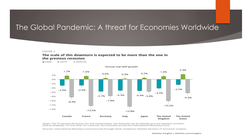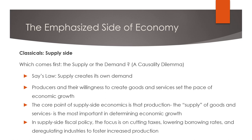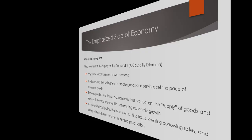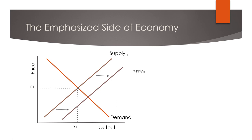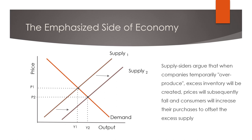The fourth distinction is the relevant side of the economy. For the Classicals, this is the supply side. Jean-Baptiste Say, a classical economist, stated that supply creates its own demand. Producers, in their willingness to create goods and services, set the pace of economic growth. The core point of supply-side economics is that production — the supply of goods and services — is the most important factor in determining economic growth. In supply-side fiscal policy, the focus is on cutting taxes, lowering borrowing rates, and deregulating industries to foster increased production. In this graph, we can see that when there is an increase in supply from S1 to S2, there is a decrease in price from P1 to P2. Supply-side economists argue that when companies temporarily overproduce, excess inventory will be created, prices will subsequently fall, and consumers will increase their purchases to offset the excess supply.